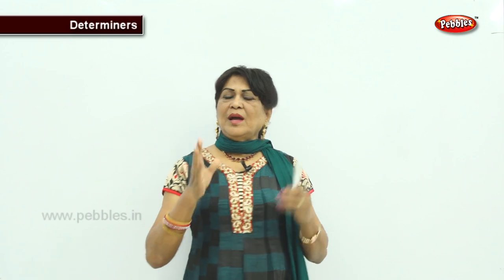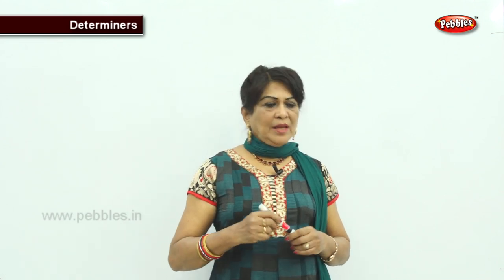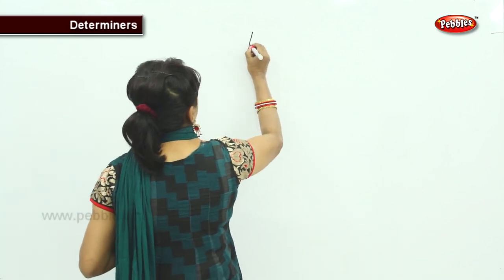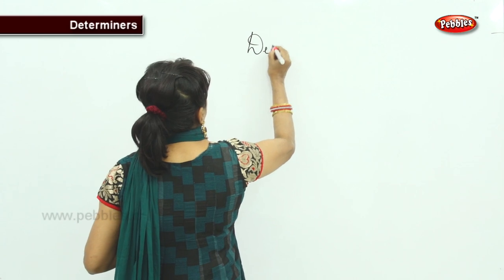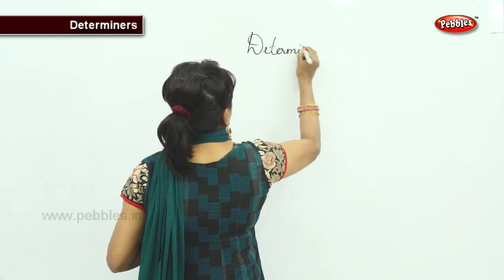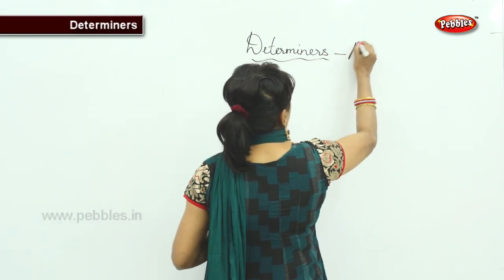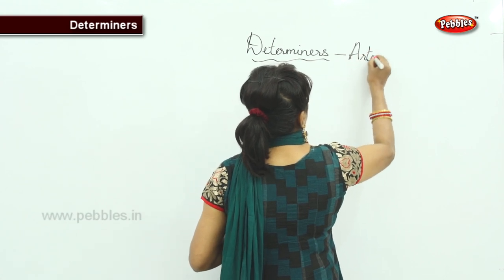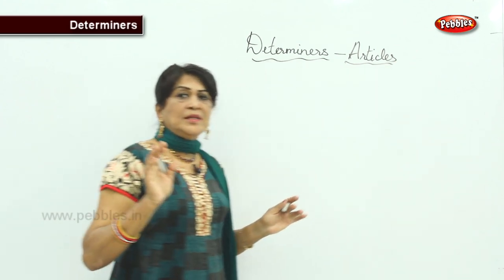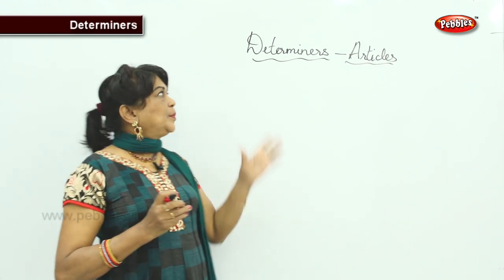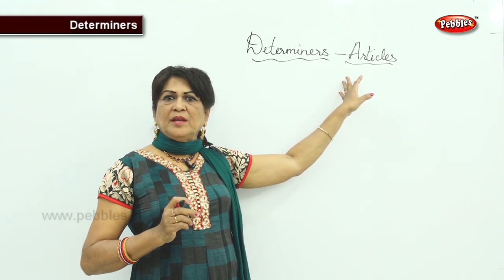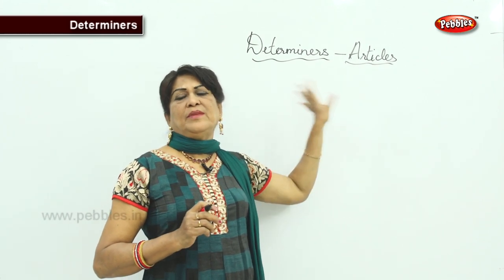We are going to do a new chapter on determiners. Under determiners we have many types, and among these, articles are very important. Determiners qualify a noun, and there are many kinds including possessives. Articles are a key category and are of three kinds.